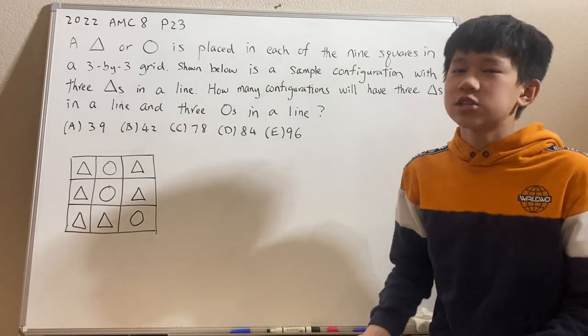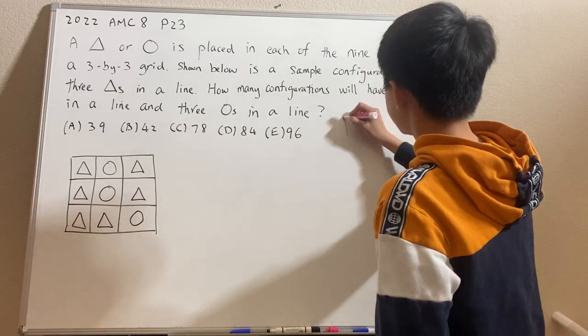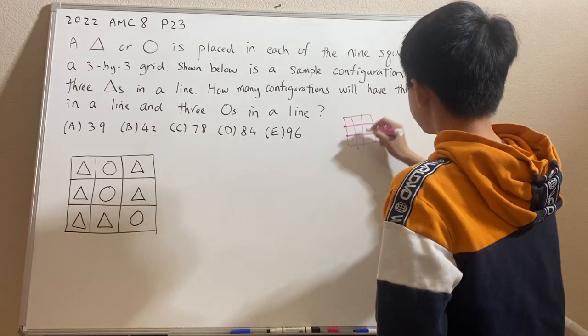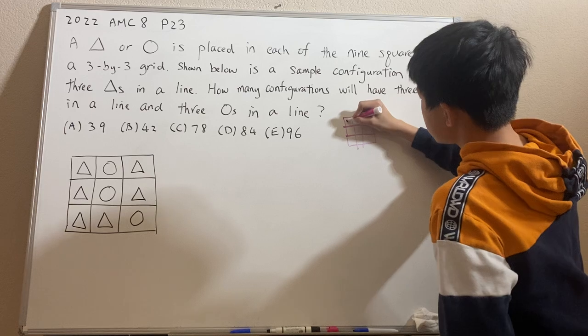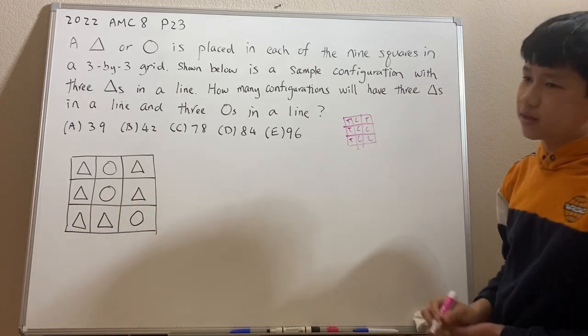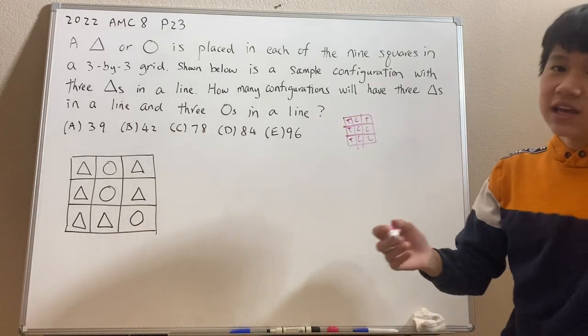So for these problems, I always like to start off with just drawing the stuff. Drawing some examples. Some examples that fit this criteria are T, T, T, C, C, C, and this last one can be anything. So that's if T is vertical.